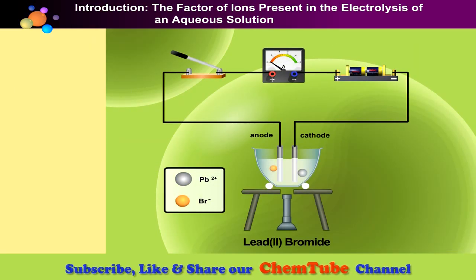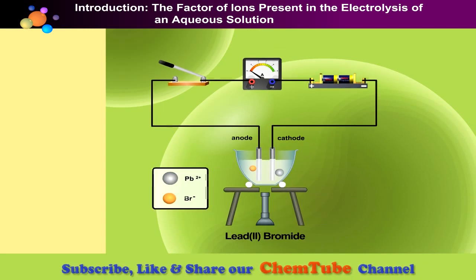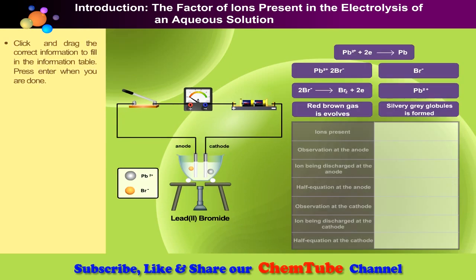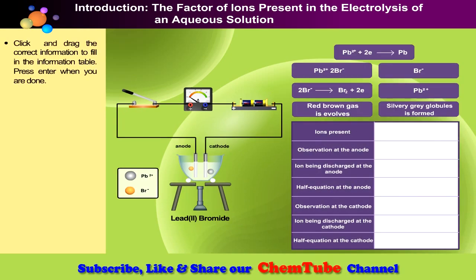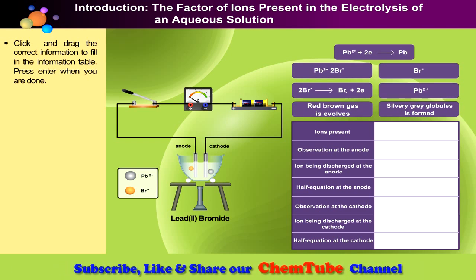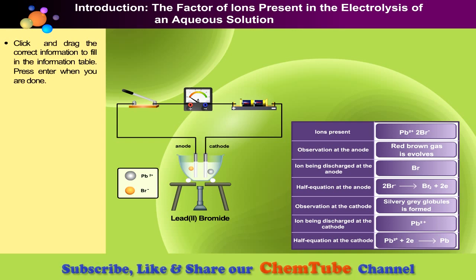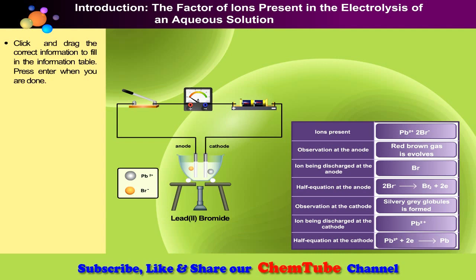Do you still remember the electrolysis of molten lead bromide? Let's refresh your memory. Click and drag the correct information to fill in the information table and press enter when you're done. From the table it is clearly seen that there is only one cation — lead 2 ions — and one anion — bromide ions.